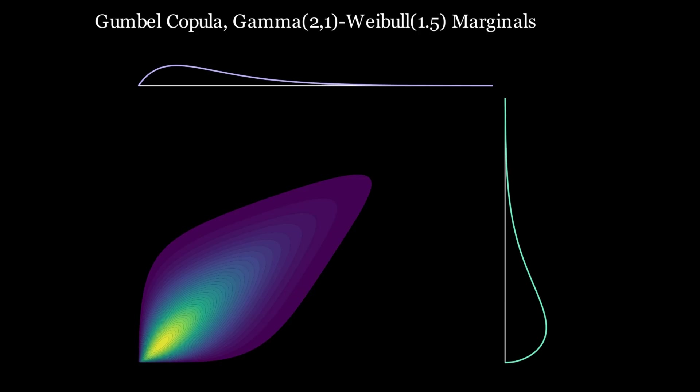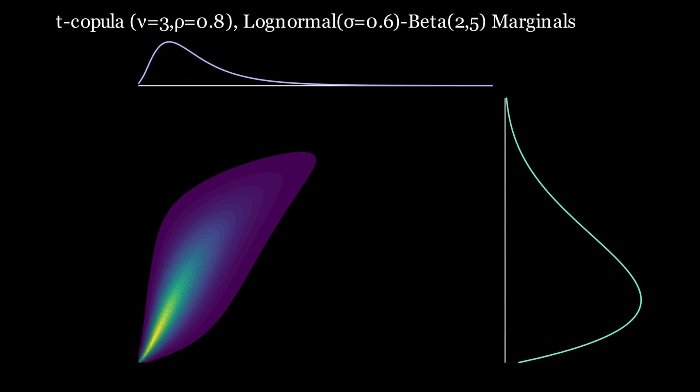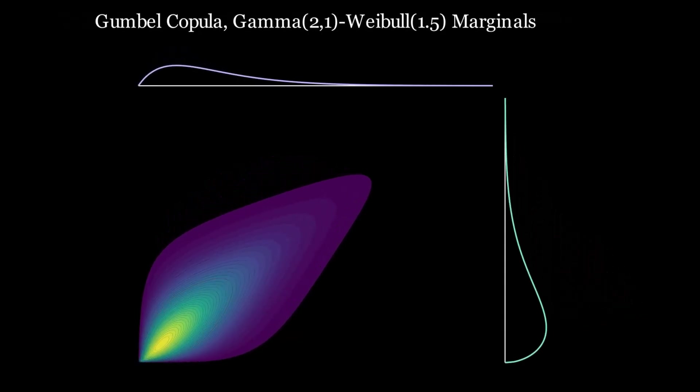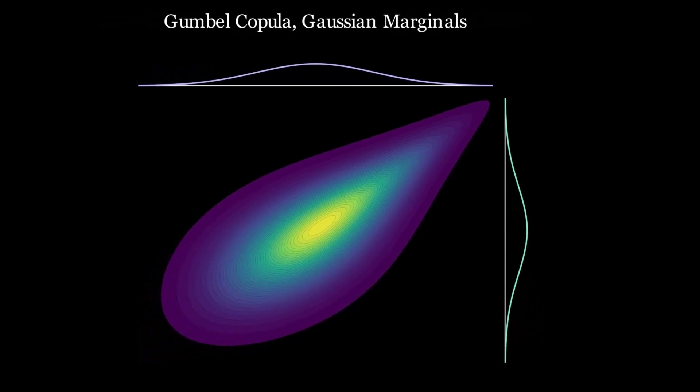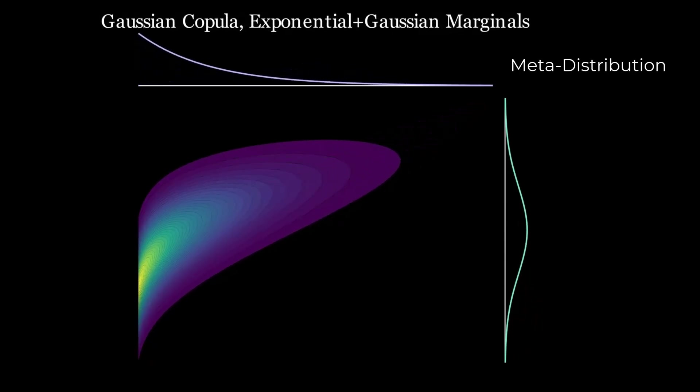We can switch to a Gumbel copula while keeping Gaussian marginals. And then replace the marginals with different distributions. And we can go on and on, mix and match different marginals and copulas.